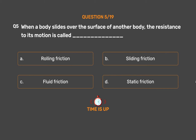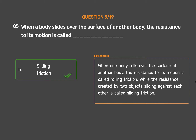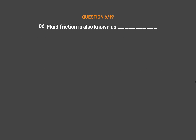The correct answer is Option B: Sliding friction. When one body rolls over the surface of another body the resistance is called rolling friction, while the resistance created by two objects sliding against each other is called sliding friction.